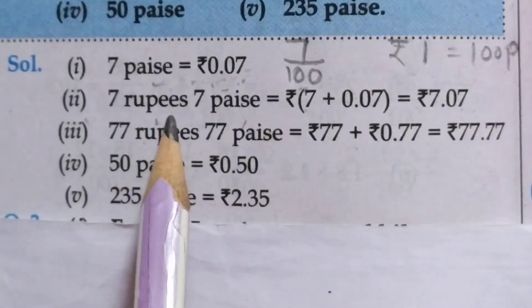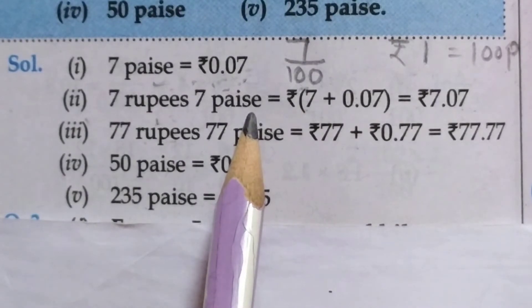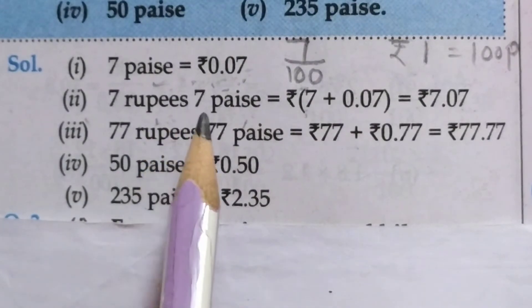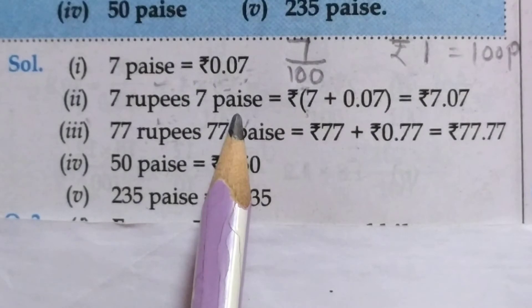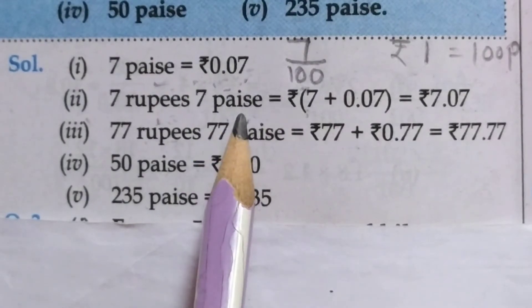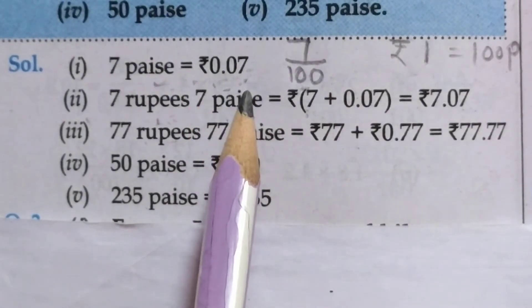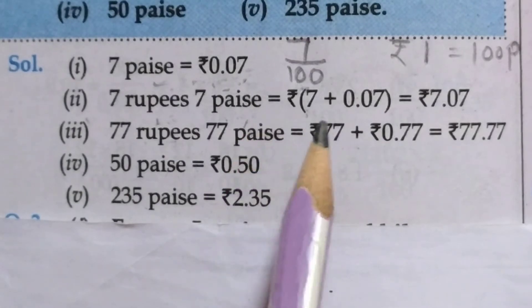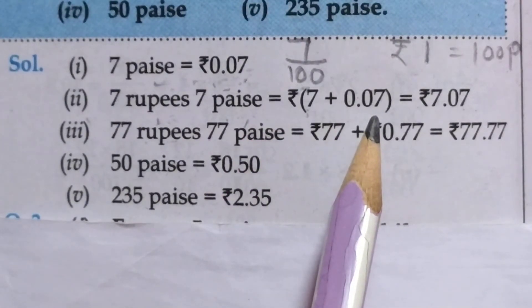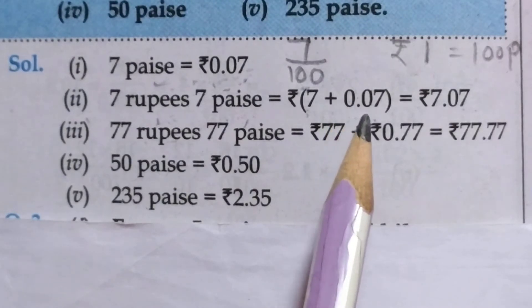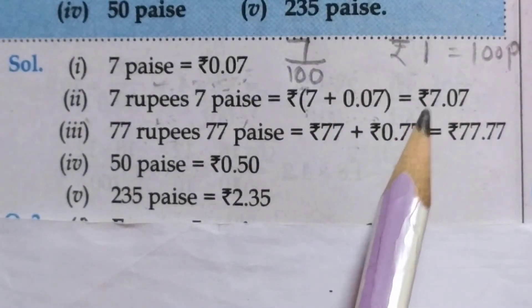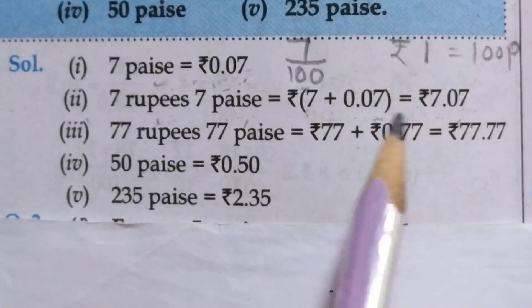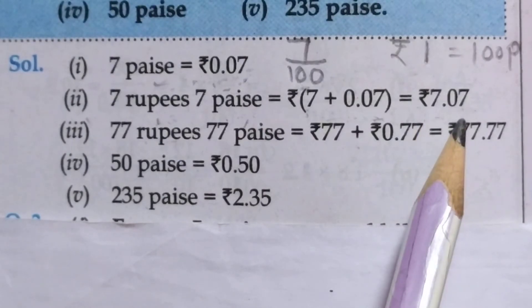Next, second, 7 rupees 7 paise. Now students, first of all, write down 7 rupees as it is, because it is in rupees. Now, 7 paise. So convert 7 paise into rupees. So, 7 paise is equal to rupees 0.07 as we have done in the first. So write down 7 paise, write down in place of it 0.07 rupees. Now, 7 plus 0.07. So the answer will be rupees 7.07. So students, do addition between these two numbers.